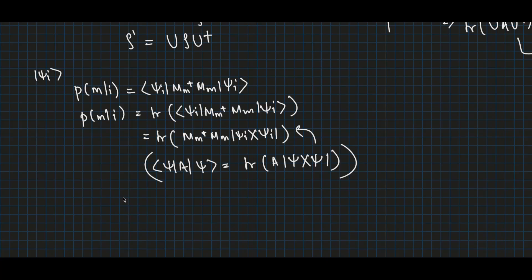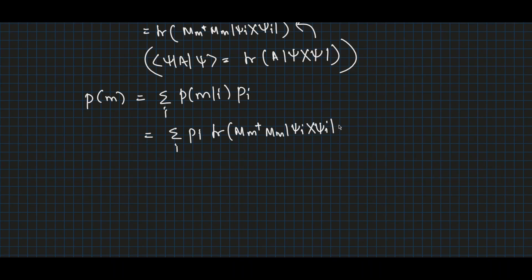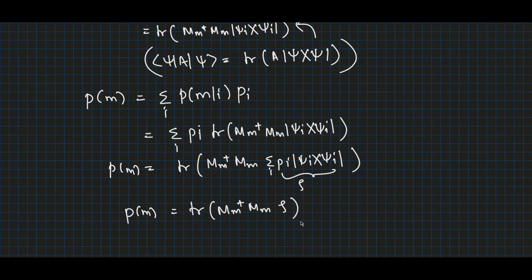The total probability of getting m is p(m) = Σ_i p(m|i)·P_i, which is the sum over initial states. So p(m) = Σ_i P_i · Tr(M†M |ψ_i⟩⟨ψ_i|). Taking P_i inside the trace, p(m) = Tr(M†M · Σ_i P_i |ψ_i⟩⟨ψ_i|), and since Σ_i P_i |ψ_i⟩⟨ψ_i| is our density operator ρ, the total probability of getting m is Tr(M†Mρ).